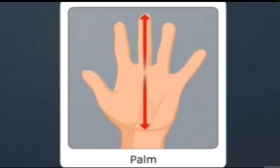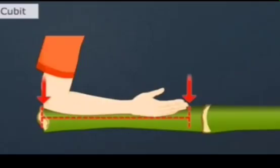Palm. It is the unit of distance equal to the length of the hand from the wrist to the end of the middle finger. Cubit. The cubit is defined as the measurement from your elbow to the tip of your middle finger when your arm is extended.